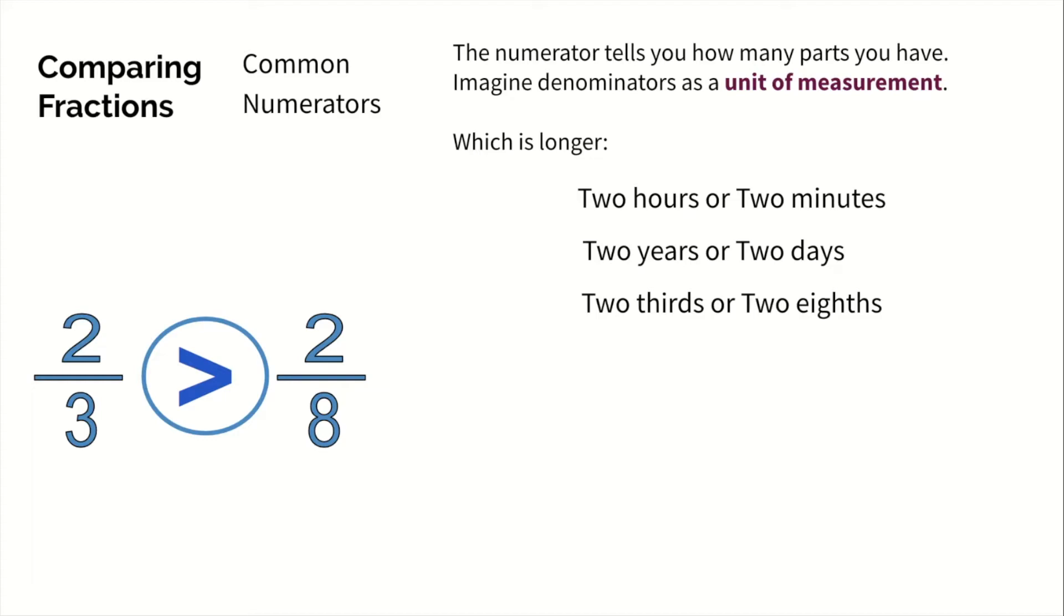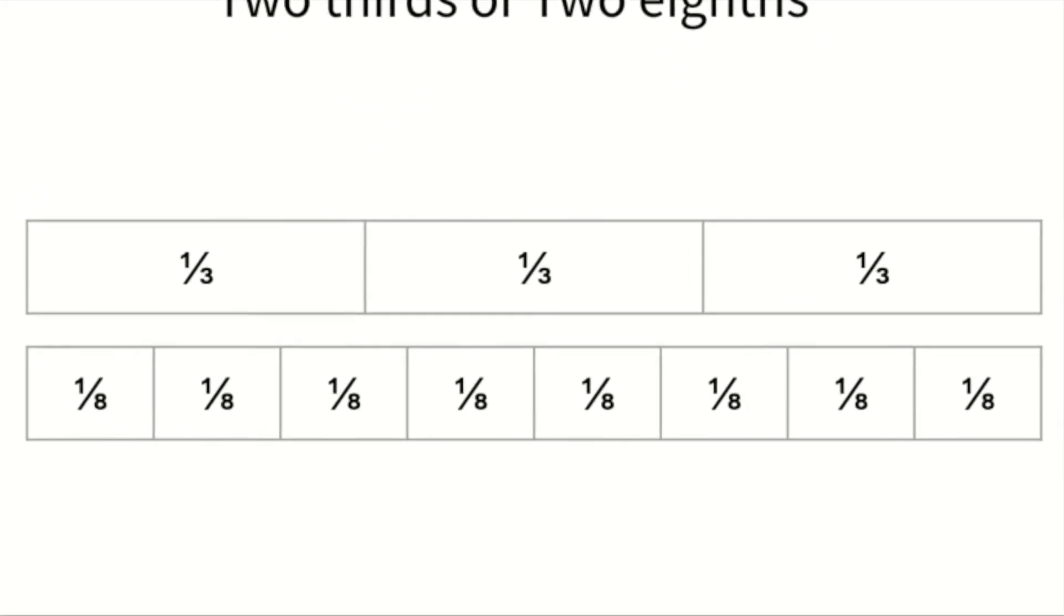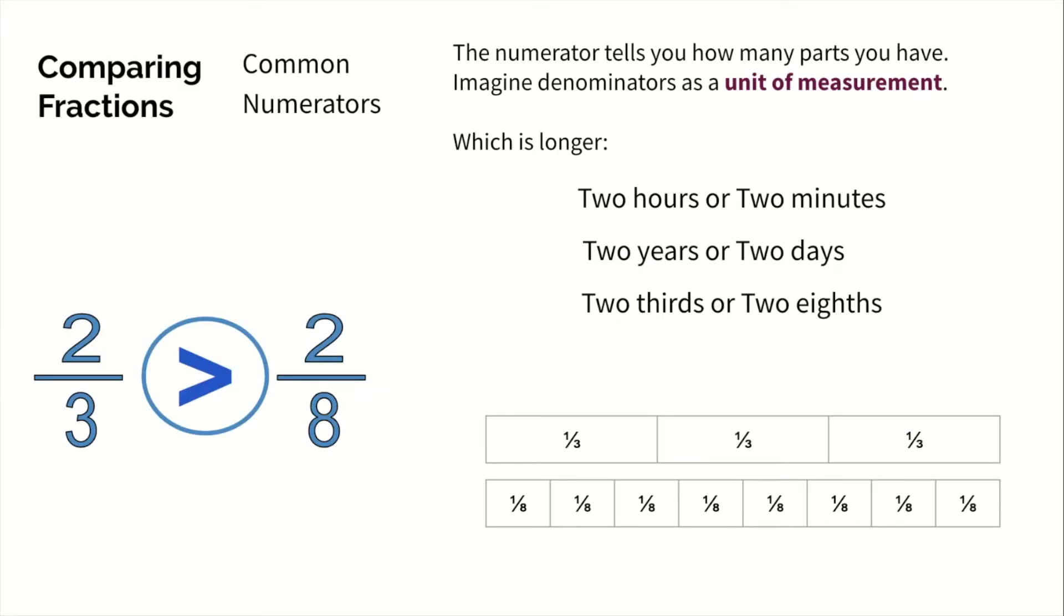Denominators tell you the number of parts that make up the whole. So the larger the denominator is, the more parts that it's broken into, which means each part is going to be smaller. You see how the thirds, it's just three of them, so they're a lot larger. The eighths, however, are more parts, which means each part is small.